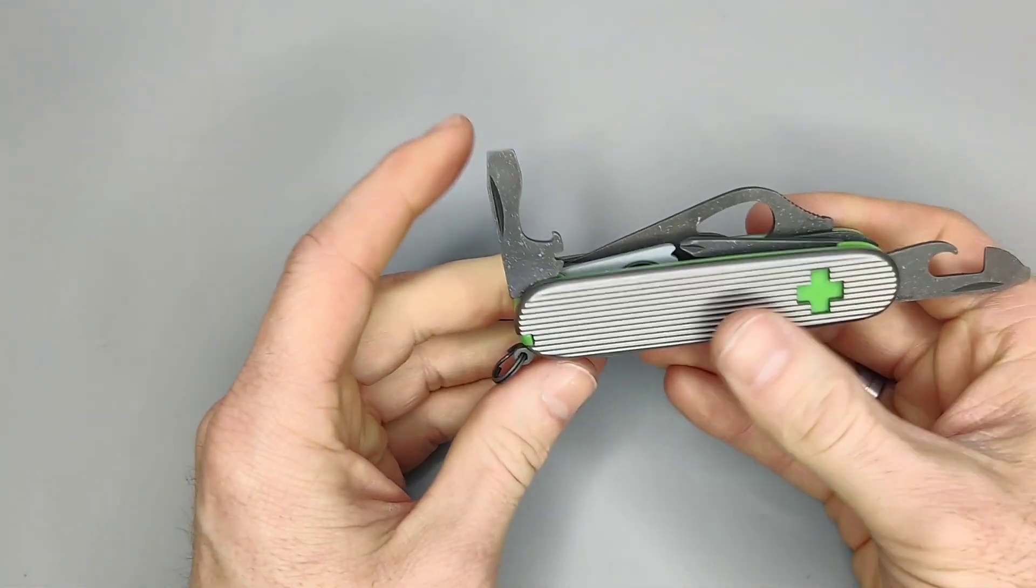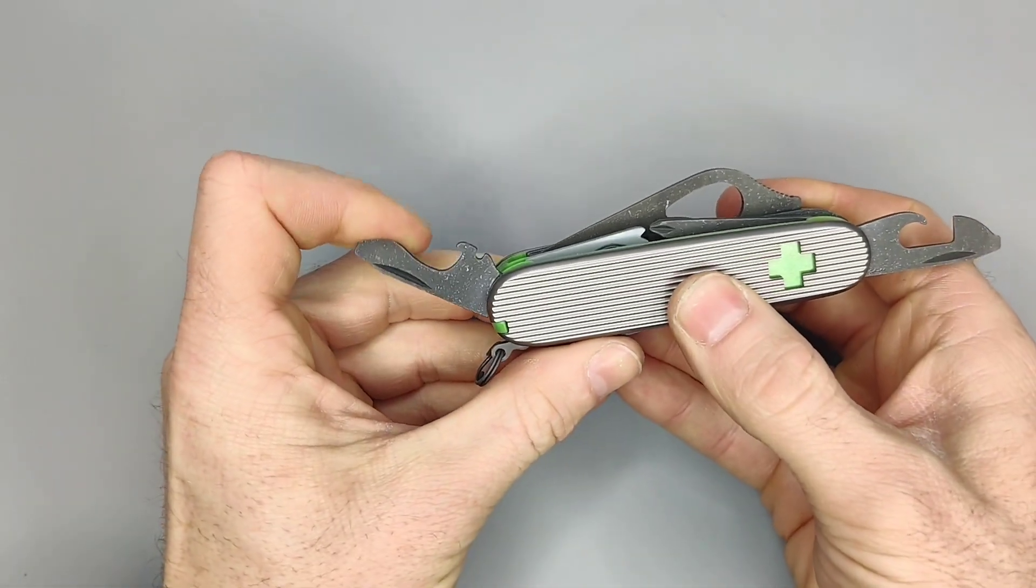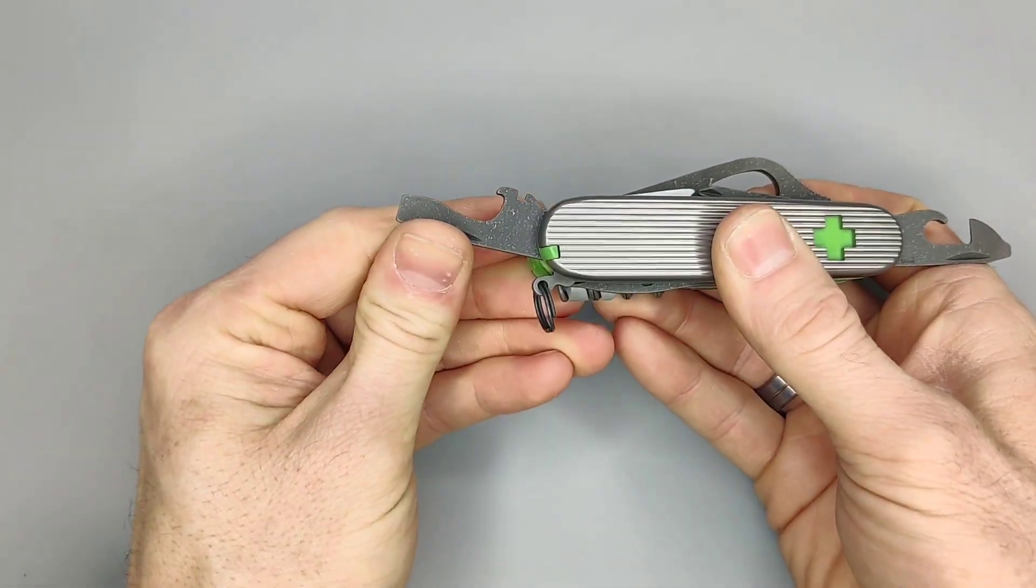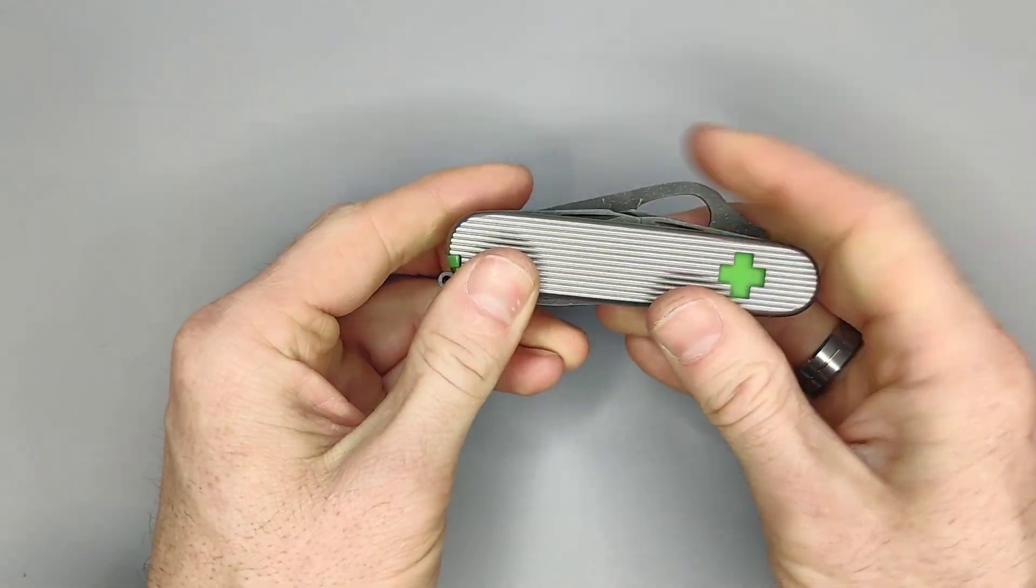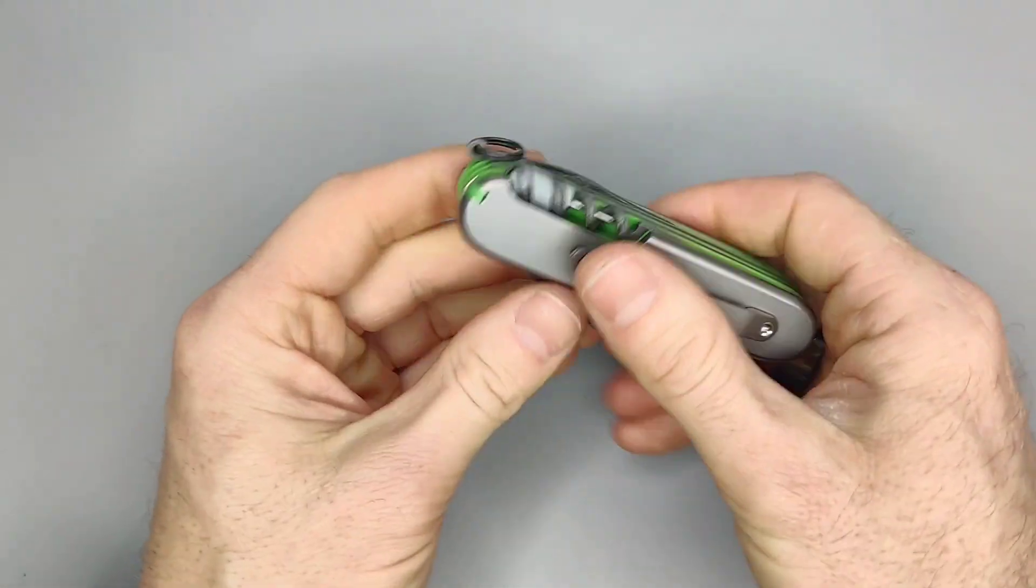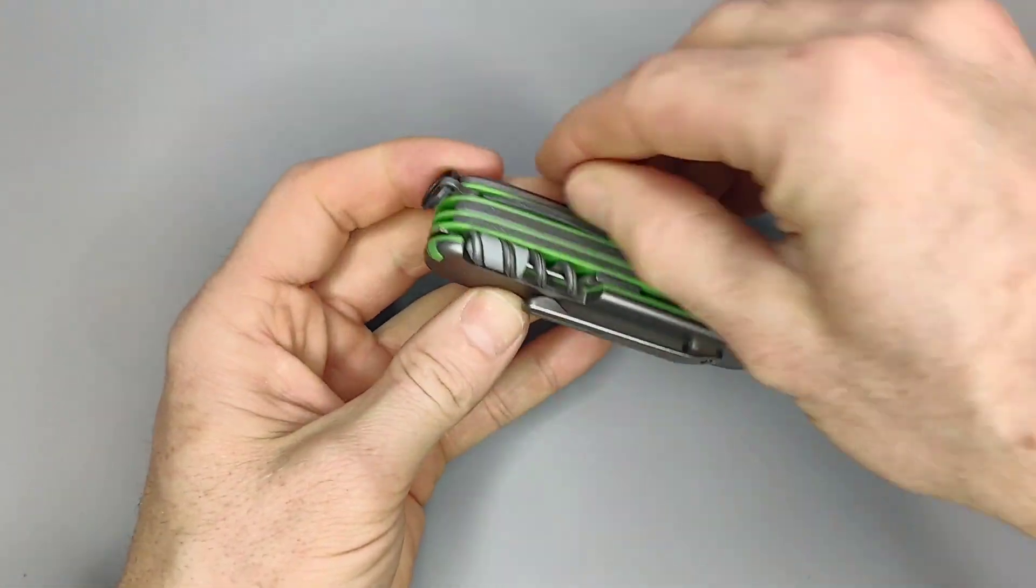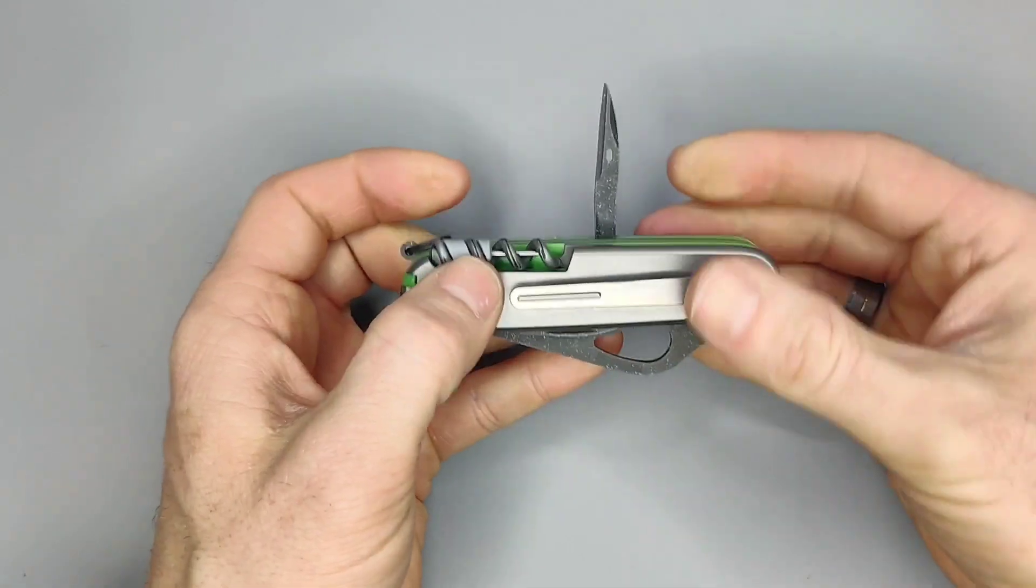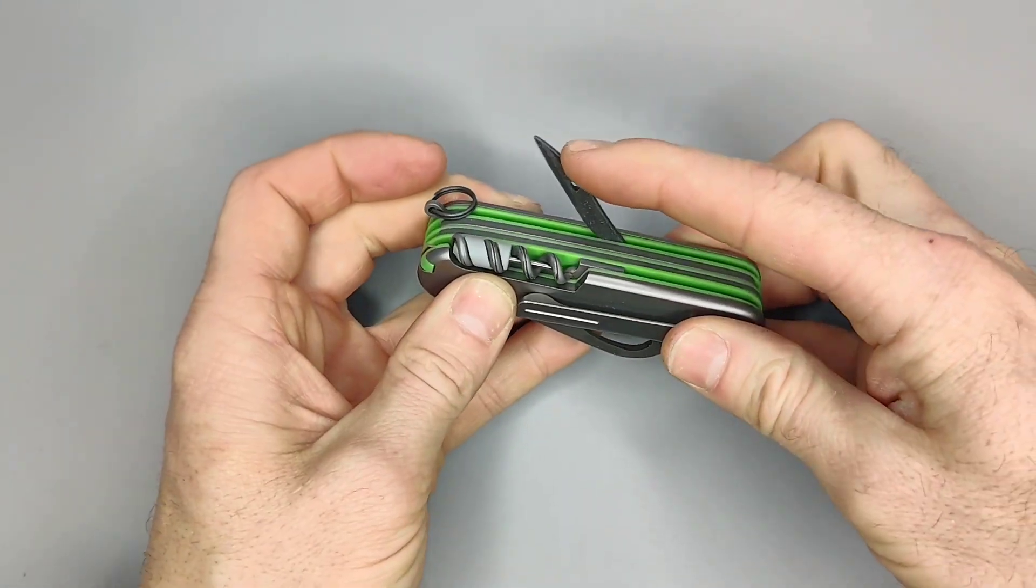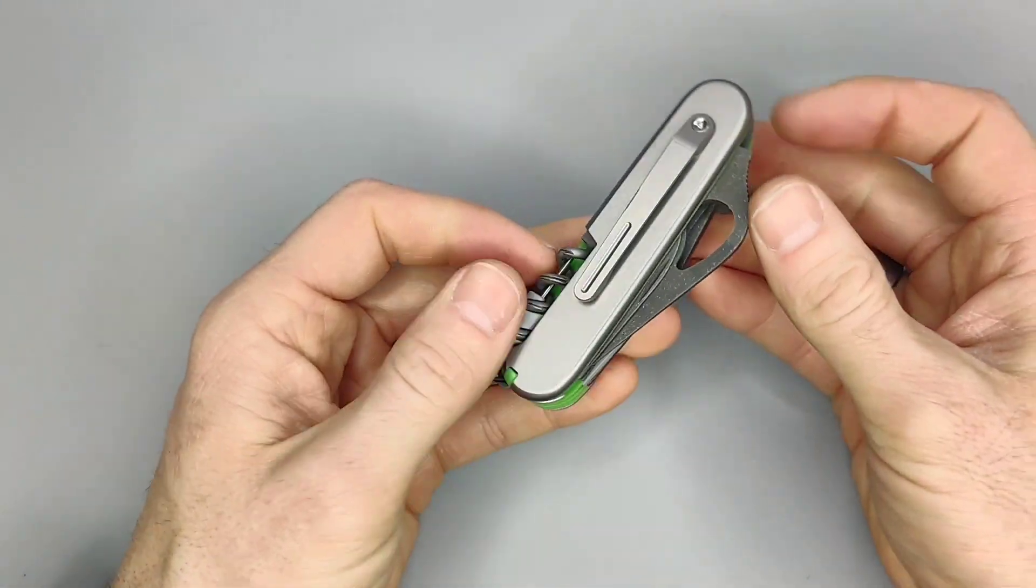And on the back we have the corkscrew and an awl.